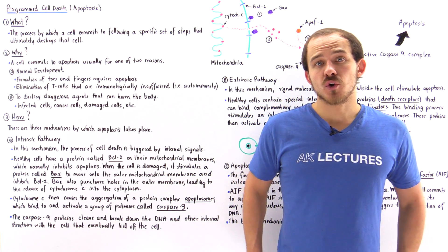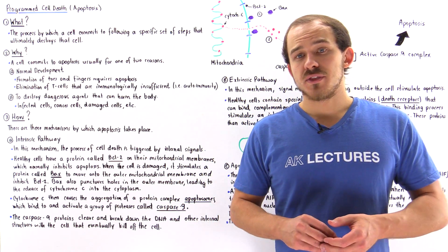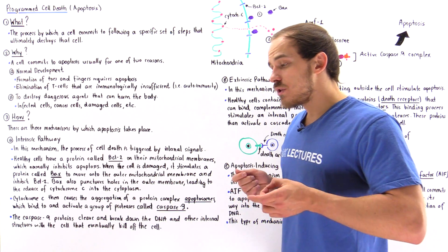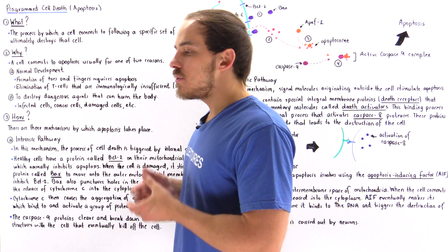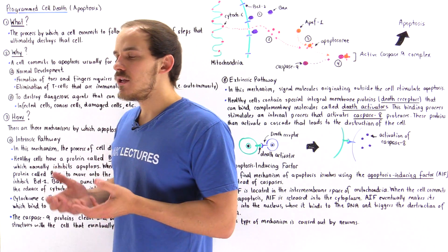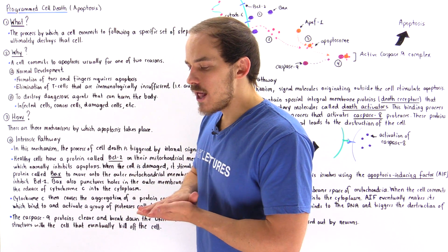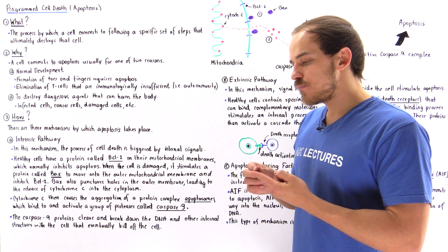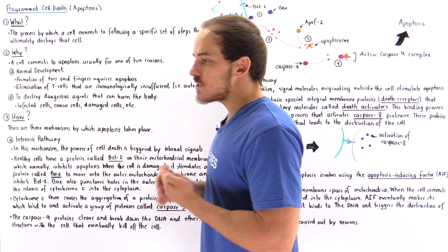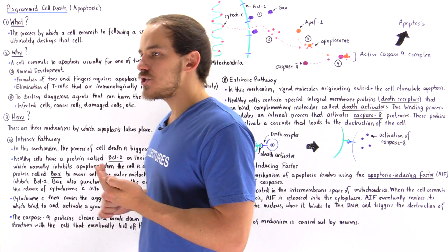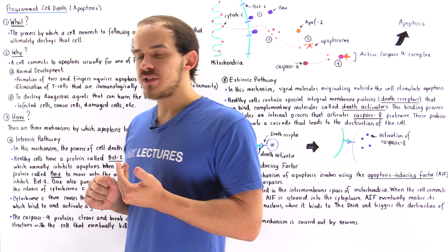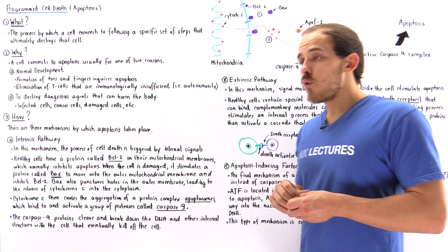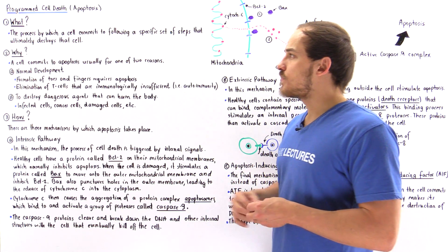Apoptosis, also known as programmed cell death, is a process that takes place not only in the cells of our own body, but also in the cells of other organisms as well. What exactly is apoptosis? Why does apoptosis take place? And how does apoptosis take place? These are the questions we're going to address in this lecture.